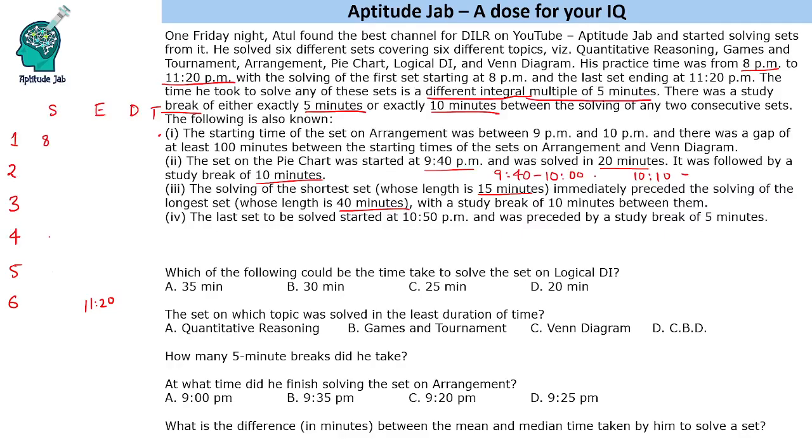It says solving of shortest set is 15 minutes preceded the solving of the longest set which is 40 minutes. One important thing to understand here is the language. It says 15 minutes set preceded the solving of 40 minutes set. So it says 15 and then there is a gap of 10 minutes and then 40 minutes. If the word preceded by was used, it means that 40 minutes came first and then 15 minutes. So preceded this will be clear.